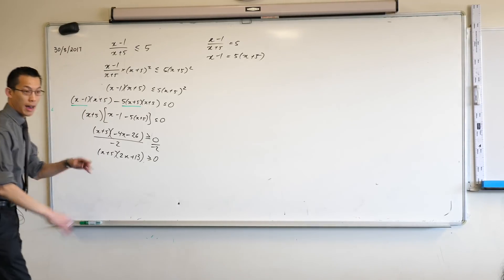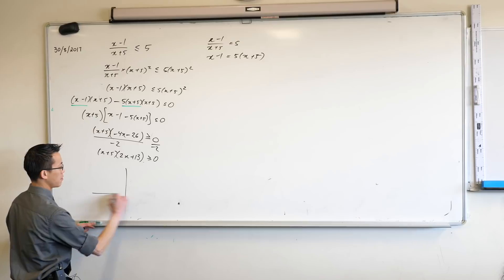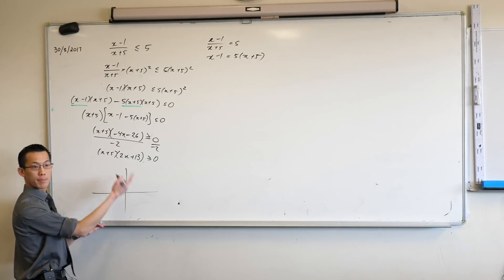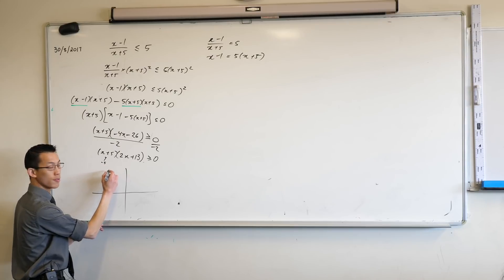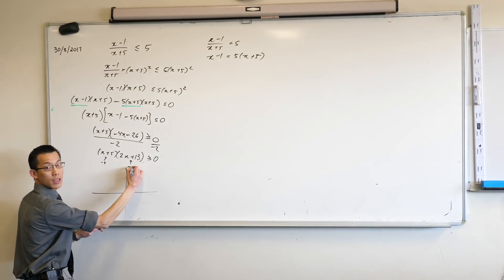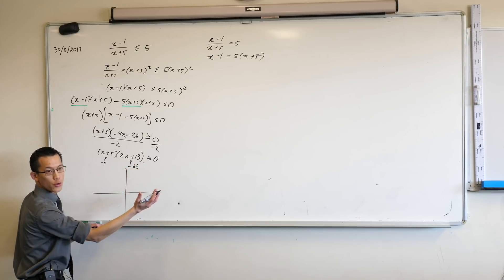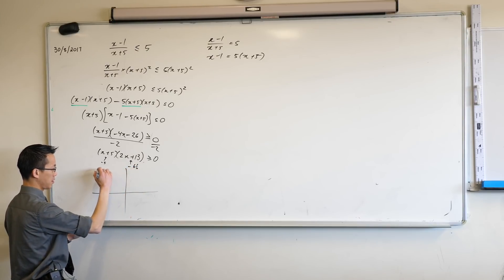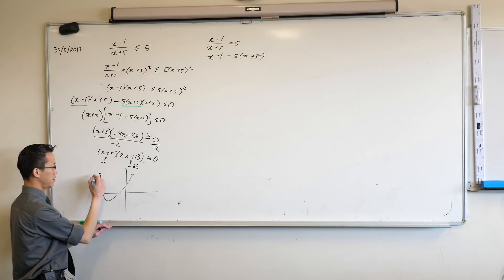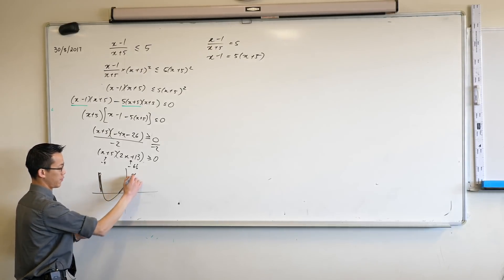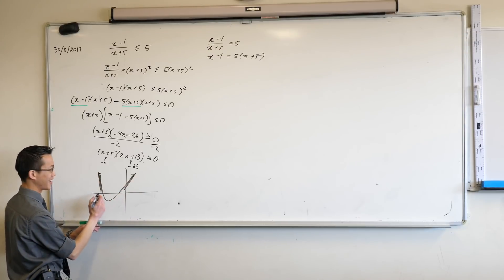Now I can do a really rough sketch of this because this is going to be a parabola. This root over here will be negative 5. This root over here will be negative 6 and a half. We already knew that number, so it's going to look something like this I guess. And we want the positive parts. That's this part over here and this part over here. That's a terrible scale, but you get the idea.